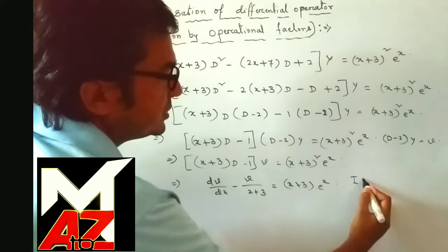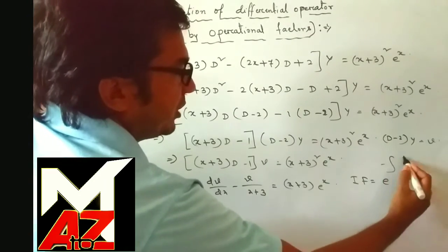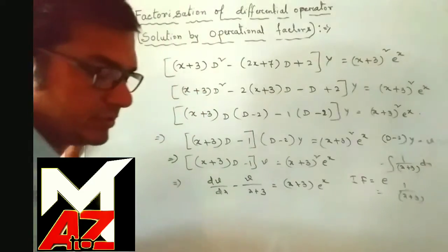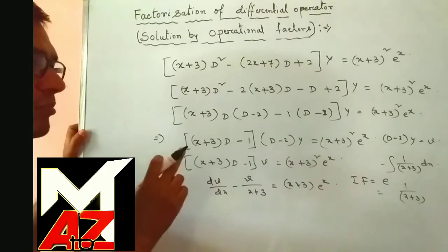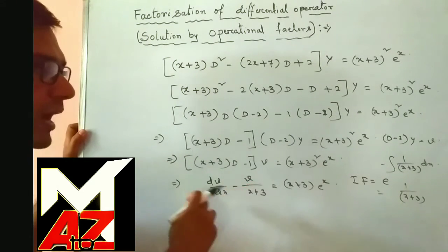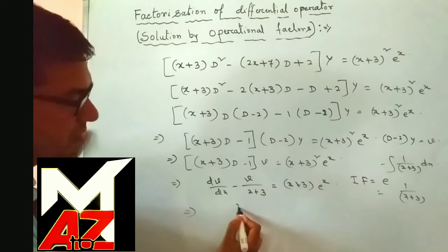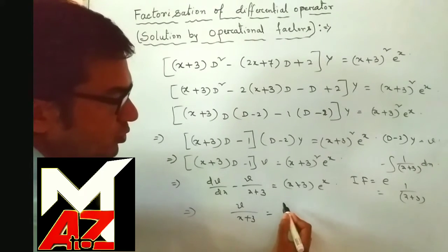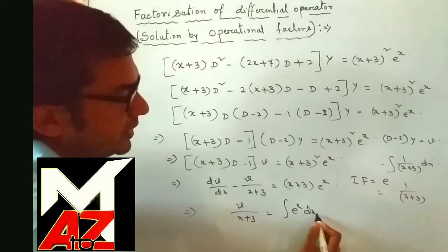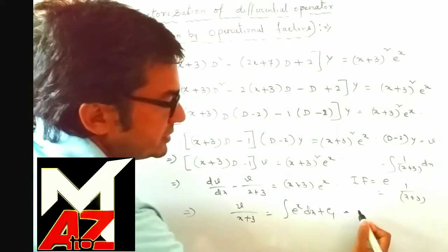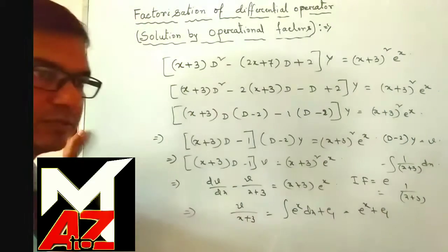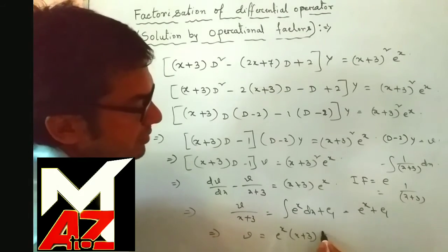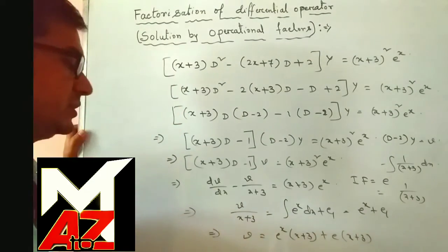The integrating factor of this equation is e^(∫−1/(x+3)dx) = 1/(x+3). Multiplying both sides by the integrating factor and integrating, we get v/(x+3) = ∫eˣ dx + C₁ = eˣ + C₁. So we can write v = eˣ(x+3) + C₁(x+3).